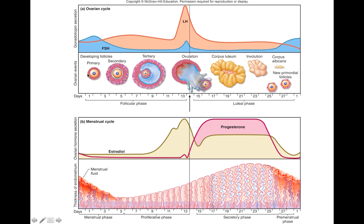You do stimulate growth of the follicles during the follicular phase. During each month, there will be one follicle that outgrows all the others — a mature or Graafian follicle. This follicle will ovulate, meaning the egg, the oocyte, is going to burst out of this follicle.